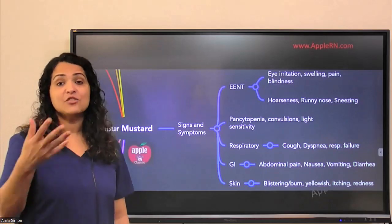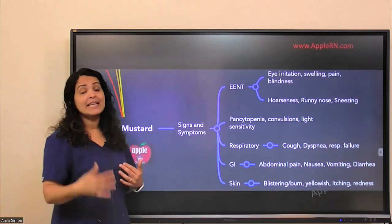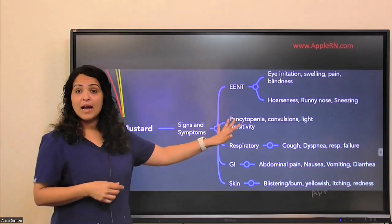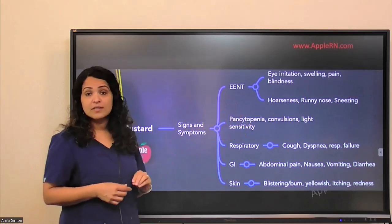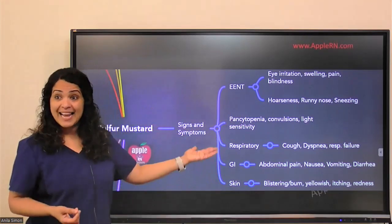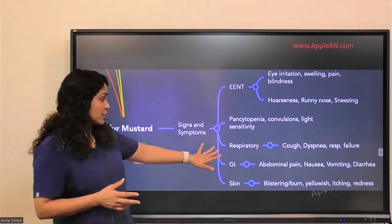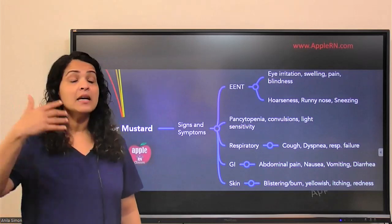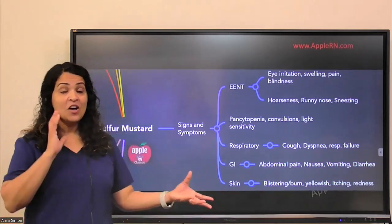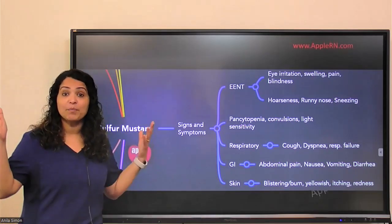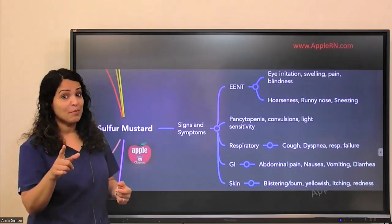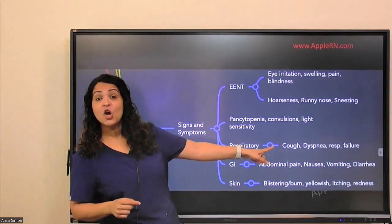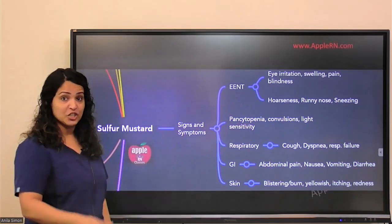Pancytopenia means your WBCs, RBCs, and platelets may come down, which can cause bleeding and other issues — including bleeding from the nasal cavities. If the exposure is really severe, it can cause nervous system problems, convulsions, and photophobia — light sensitivity. In the respiratory system, it might start with a cough, then progress to shortness of breath, then full-blown dyspnea, and then they might end up in respiratory failure. Patients may initially appear asymptomatic, but they can progress to respiratory failure very fast.